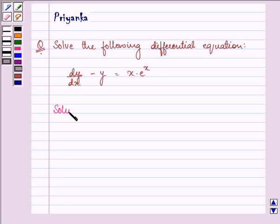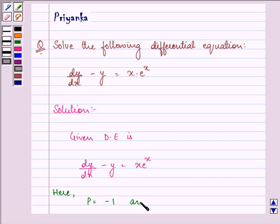Let us quickly proceed with the solution. We are given that the differential equation is dy/dx - y = x*e^x. Now it is a first order differential equation where p = -1 and Q = x*e^x.